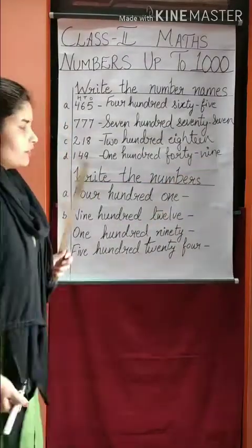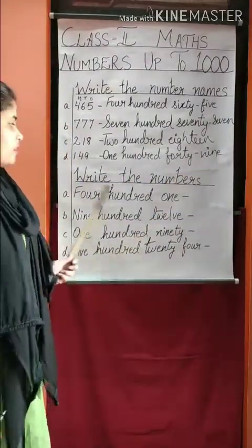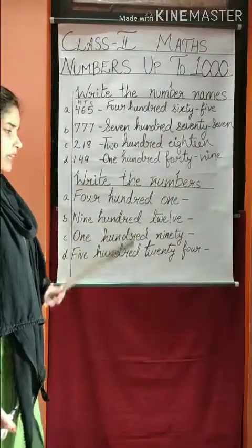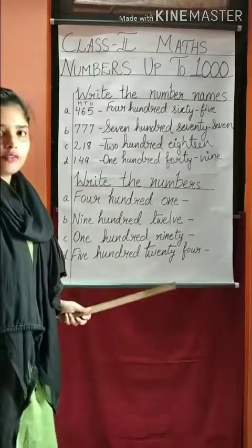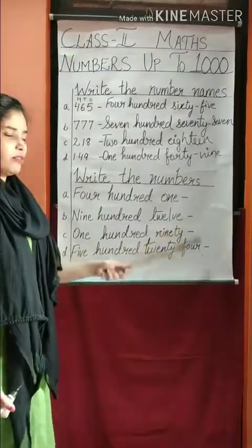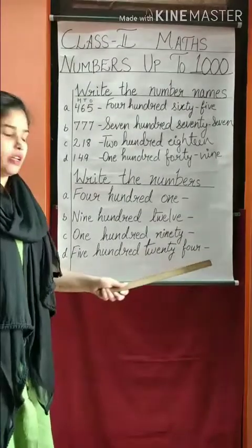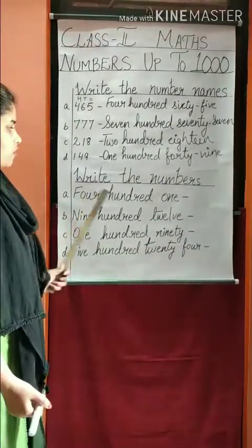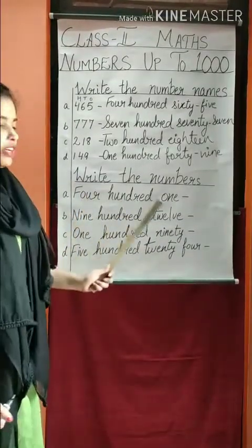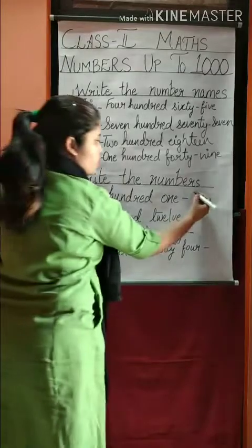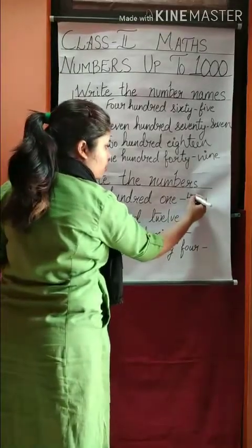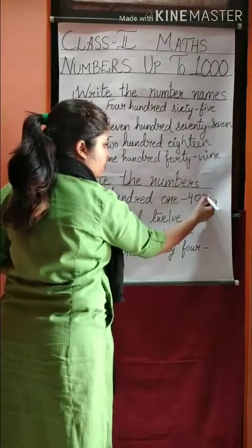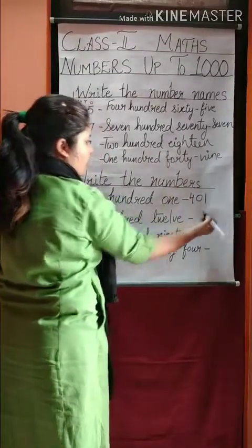Now the next exercise is write the numbers. The spelling is already given and you have to write its number. The first one is four hundred one. So we write 4, 100, 1.